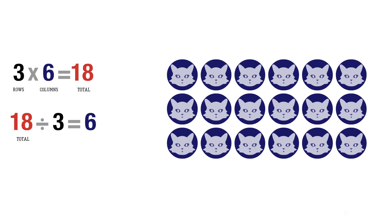18 is our total, 3 is how many rows we have, and 6 is how many cats are in each row.